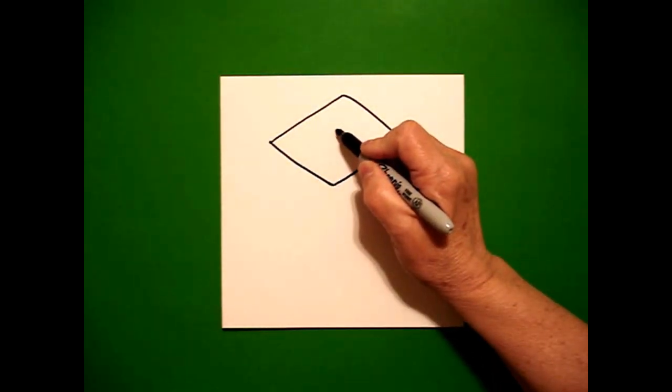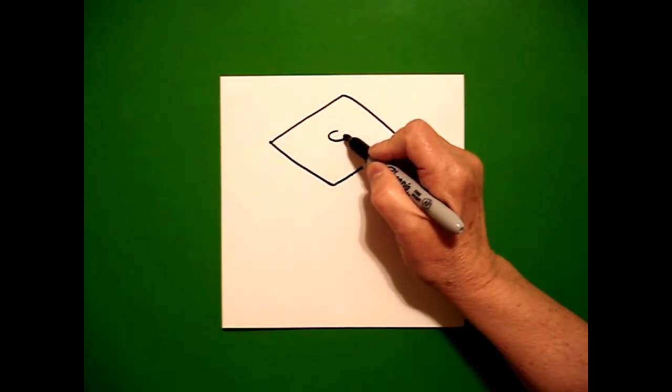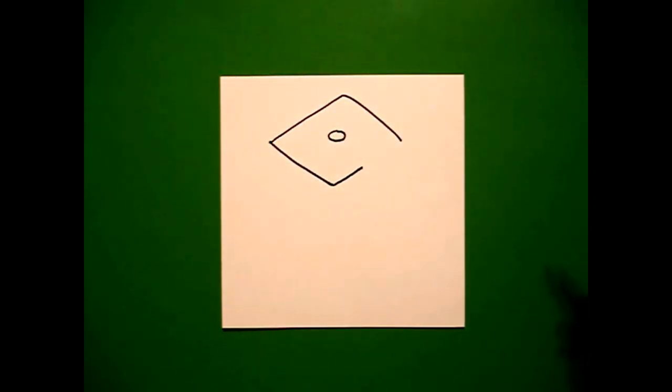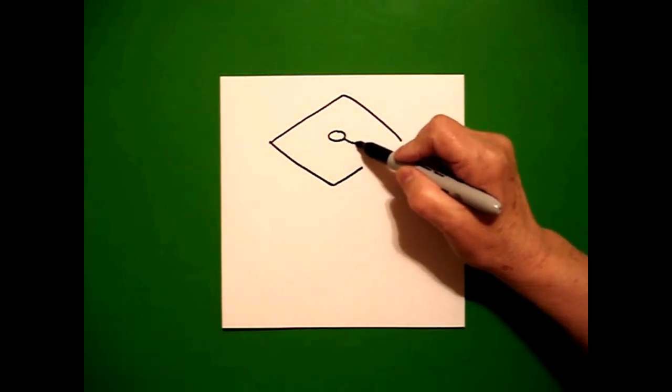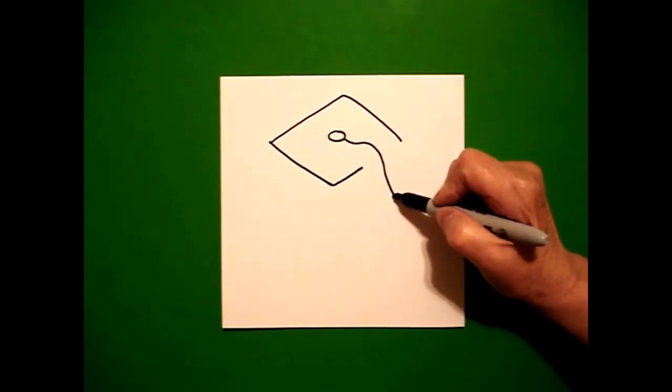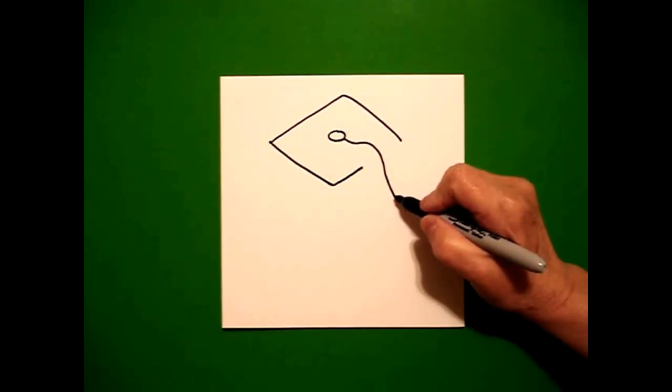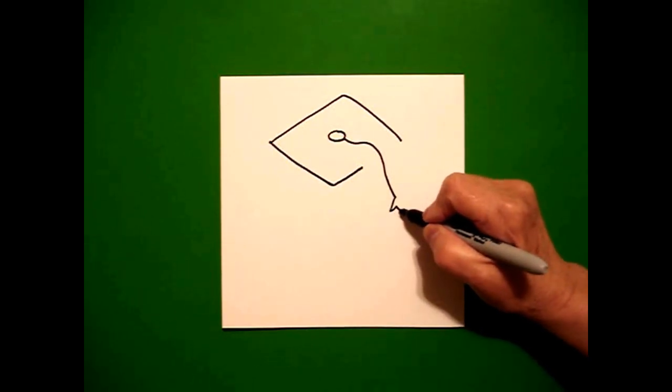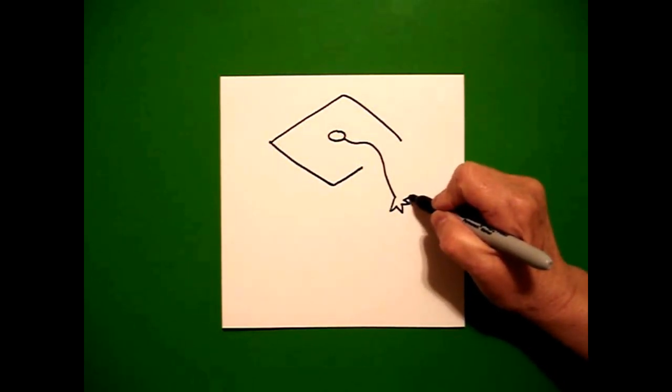I come right in the center and I draw a flat oval. From that flat oval I now draw a curved line down and at the end I'm going to go zig zag, zig zag, zig zag.